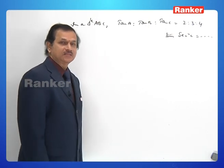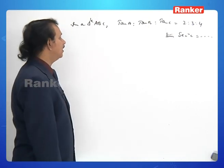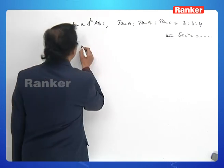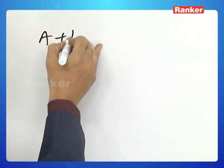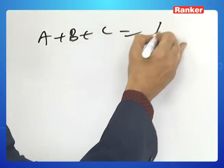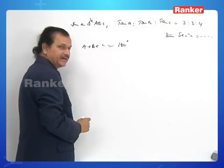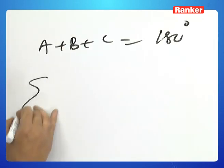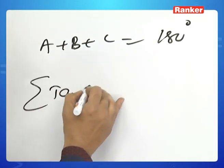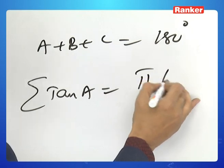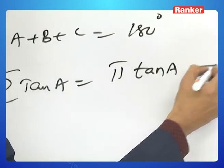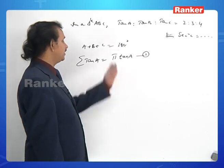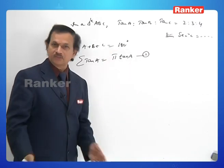Since ABC are the angles of a triangle, A + B + C = 180°. When A + B + C = 180°, we have the identity: tan A + tan B + tan C = tan A · tan B · tan C.